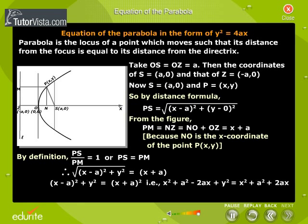we get x² + a² - 2ax + y² = x² + a² + 2ax. That is, y² = 4ax. This is the equation of the parabola.